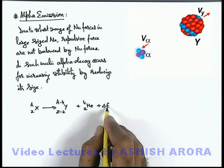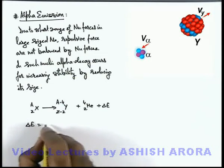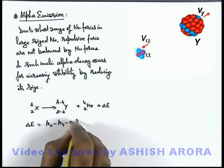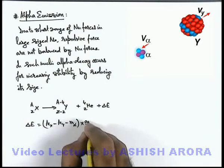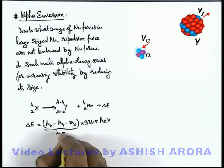For this energy we can write directly this Q value of the reaction, or the energy release, we can write as M_X minus M_Y minus M_alpha multiplied by 931.5 million electron volt if these masses are given in amu.